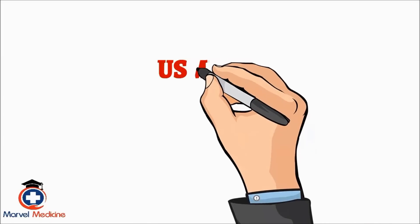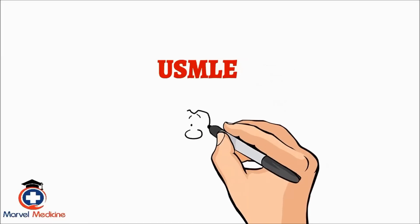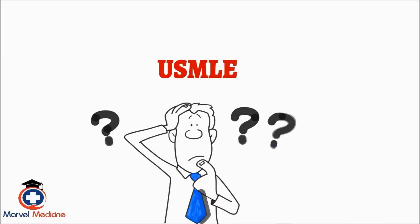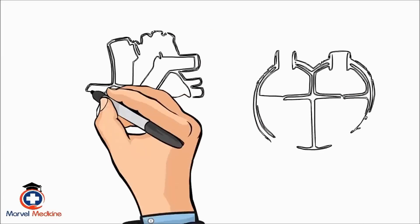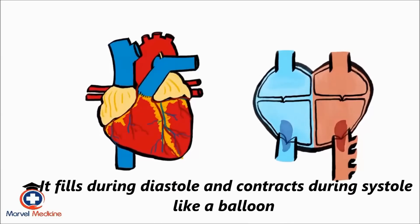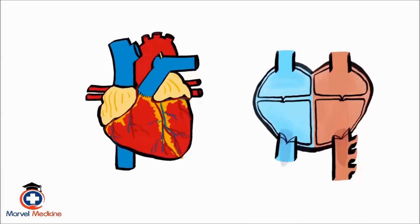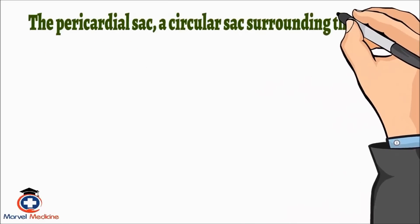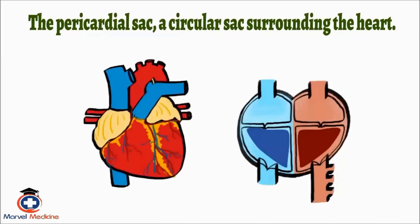This is a huge topic on the USMLE where they can ask you tons of questions. The first thing I want you to do is to visualize it. Imagine the heart, the ventricles, atria, and imagine the way it fills during diastole and contracts during systole, like a balloon. Now imagine the pericardial sac, a circular sac surrounding the heart.